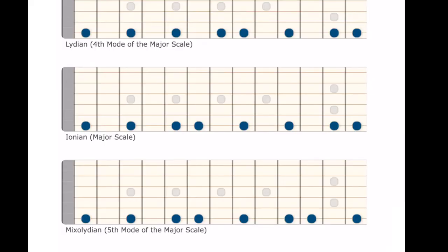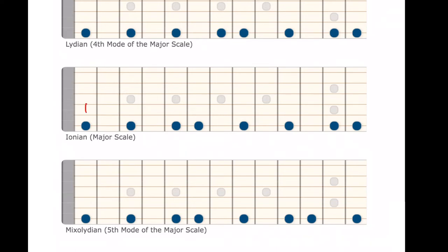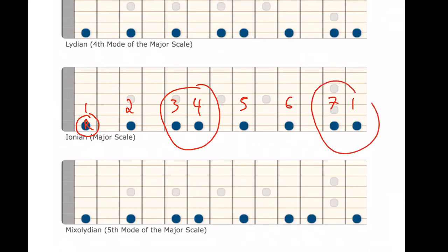There are two ways to think of modes — you can think of them as parallel or relative. Looking at the Ionian mode, it's just the major scale, so don't worry about the name Ionian unless you want to. A relative mode is if we think of all the scale degrees as numbers, and we keep all the exact same notes but move the numbers — for example, calling six 'one.'